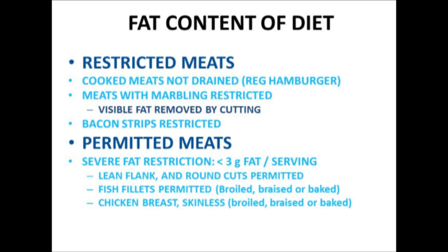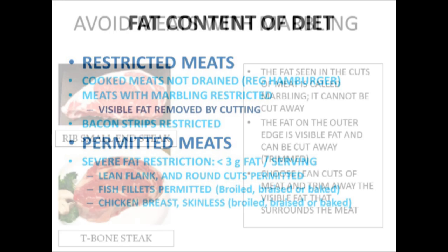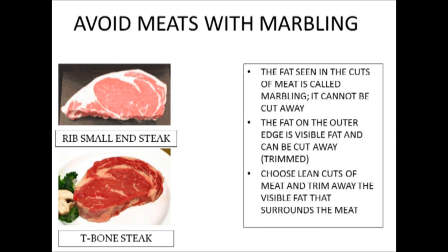So it's not necessarily restricted in fat, but it is restricting the amount of saturated fat that comes from meat, notably red meat. When selecting your meat, you want to select meats for your menu that avoid a lot of marbling. You can see on the left two cuts of meat well-renowned for marbling — the rib small-end steak and the T-bone steak. This kind of marbling fat can't be cut away. The fat on the outer edge is called the visible fat, and that one can actually be trimmed. So choose lean cuts and trim away the visible fat, but avoid at all costs the marbling cuts of meat.